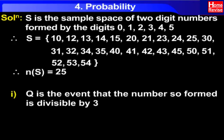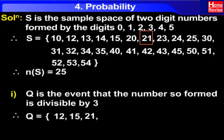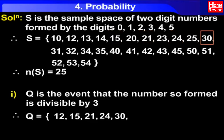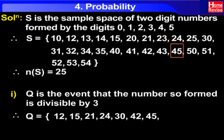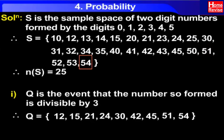Now, Q is the event that the number so formed is divisible by 3. Therefore, Q = {12, 15, 21, 24, 30, 42, 45, 51, 54}. Therefore, N(Q) = 9.